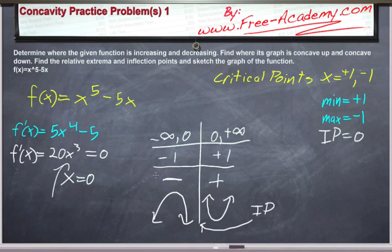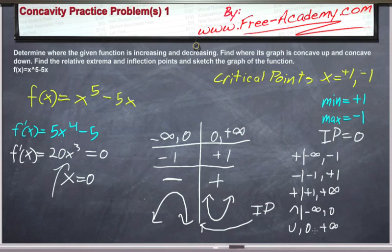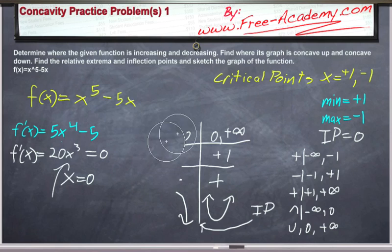So we now know we are increasing from negative infinity to negative 1. We are decreasing from negative 1 to positive 1. And we are increasing from positive 1 to positive infinity. We are concave down from negative infinity to zero. And we are concave up from zero to positive infinity.